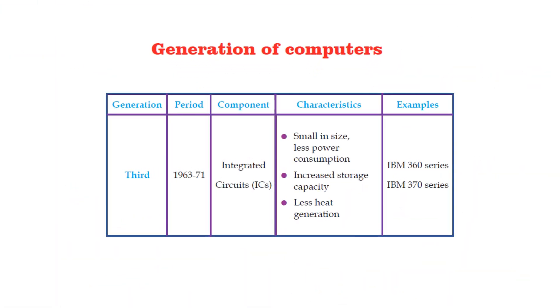The computers made in the period 1963-71 are said to be the third generation computers. These computers used integrated circuits or in short ICs. Compared to the second generation computers, these computers were small in size. They consumed less power. The storage capacity increased, and these computers generated less heat. Some of the examples of the third generation computers are IBM 360 series and IBM 370 series.